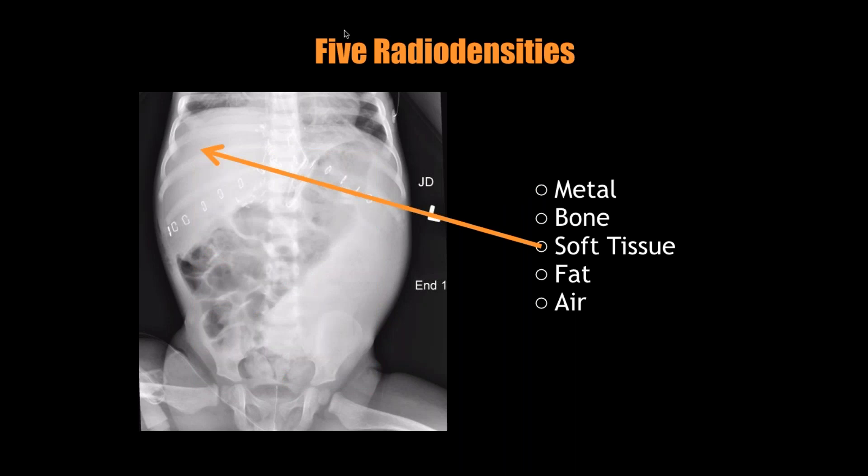Bones I think you can all identify. The soft tissues, as Sabina told us, are going to be this intermediate density. I pointed to the liver, but I could also have pointed to the big soft tissue density in the left lower quadrant, or the skeletal muscles along the anterior surface of the femur, or the heart — all of those are the same radiographic density of soft tissue. Fat is a little less dense. You can see on that thigh that the superficial part is the subcutaneous fat, with a clear demarcating line between the fat and the skeletal muscle, which is deeper and more radiographically dense.